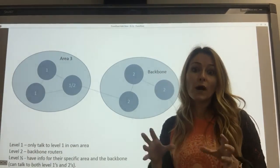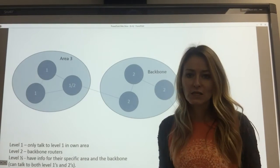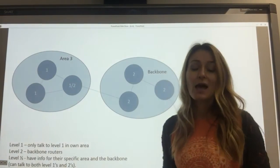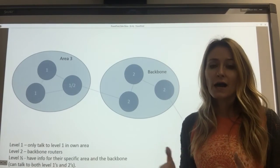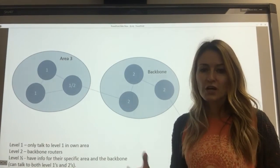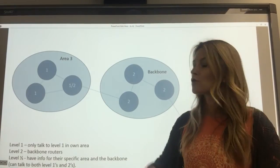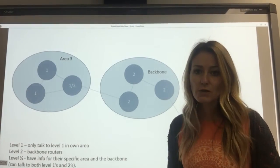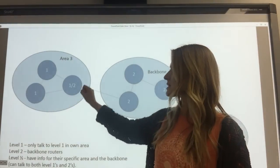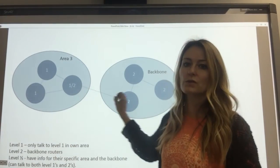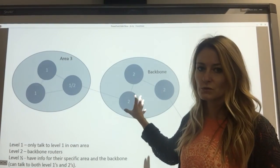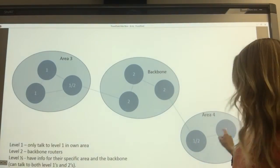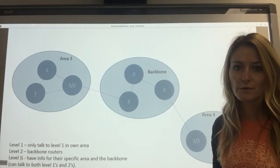The Level 1-2 router is the liaison between the Level 1s and the Level 2s. That's how ISIS shares information from one router to the next: the Level 1s communicate with the Level 1-2s, the Level 1-2s communicate with the Level 2s, and those Level 2s communicate back through the Level 1-2 to reach the Level 1 routers in another area.